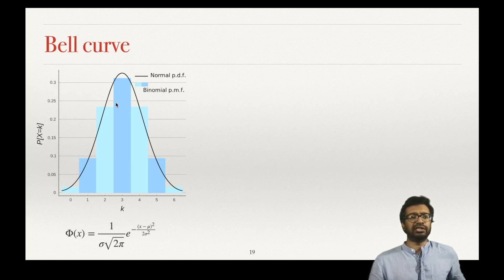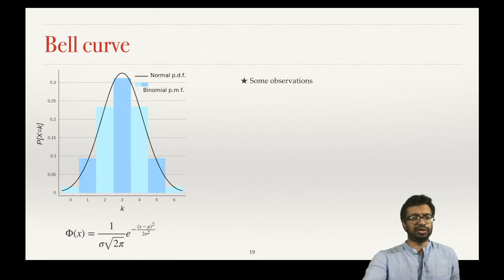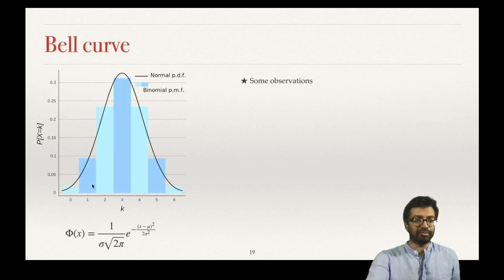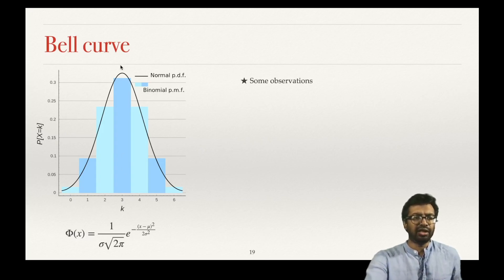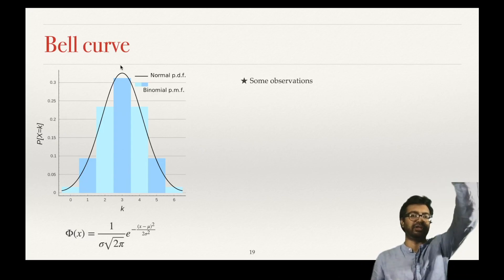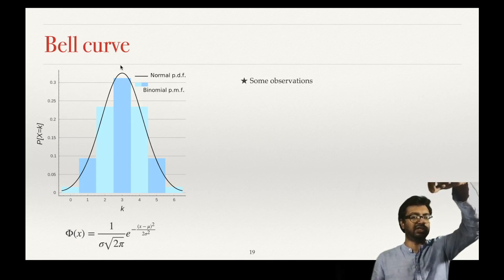The reason for calling it normal distribution is something we will soon see. Let us make some observations. Where is the mean of this distribution? The mean happens at 3, because that is the midpoint — it is a symmetric distribution. If I draw a line there at 3, the left part is symmetric to the right part, and k equals 3 is the center of gravity of this bell curve.